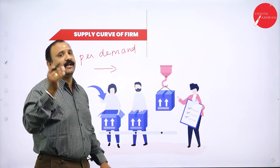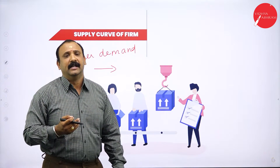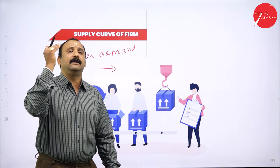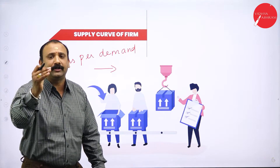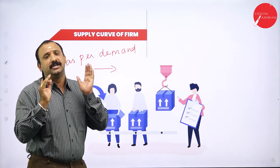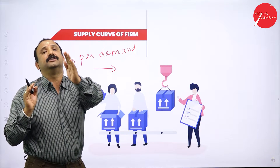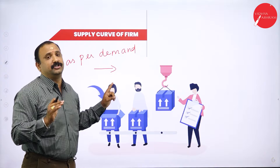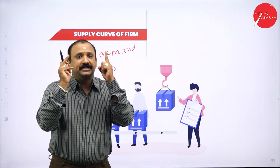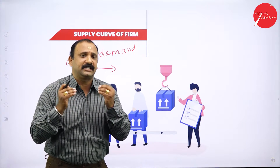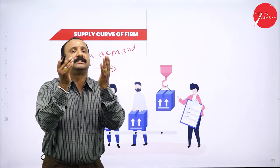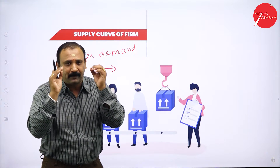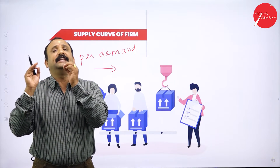For example, take a mobile phone. If the mobile phone has got demand and appeal among consumers, the manufacturing firm will try to make more and send it across so that they are able to meet consumer demand. The supply depends purely on the demand of the consumer. A company cannot take assumptions and just keep supplying — you can only supply based on demand factors at any given point of time.